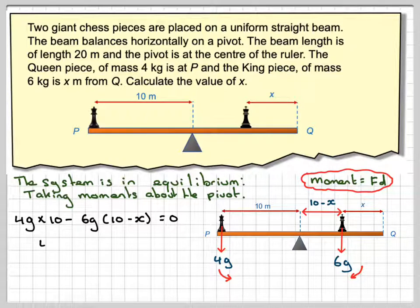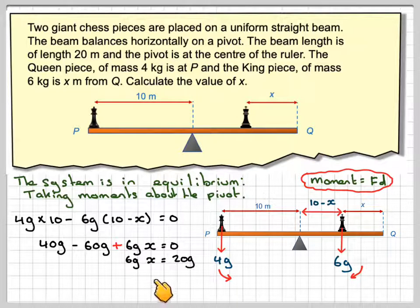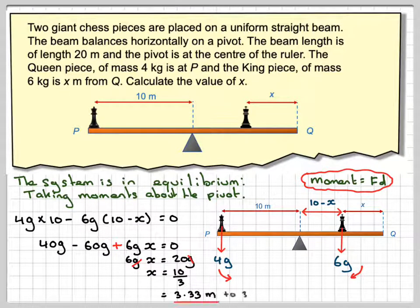So that's going to give 40G, expanding the bracket here, minus 60G plus, minus times the minus, 6GX is equal to 0. 40G minus 60G is minus 20, on the other side it will give that 6GX will be equal to 20G. The G's will cancel out, and therefore 20 divided by 6 is 10 over 3, so the distance has to be 3.33 metres to 3 significant figures.